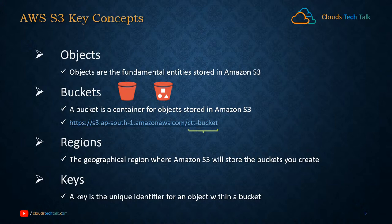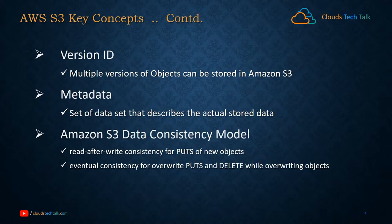The next item is keys. A key is the unique identifier for an object within a bucket. Every object has one and only one key used to identify that particular object. There is also a version ID for identifying objects, and the combination of a bucket, key, and version ID uniquely identifies one object. Regarding version ID: multiple versions of objects can be stored in Amazon S3. If you enable versioning, AWS S3 will keep all versions of files with the same name using different version markers. If you update a file using the same file name, AWS S3 will automatically create the next version of that object.